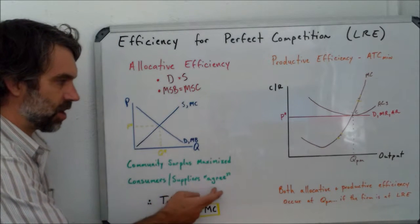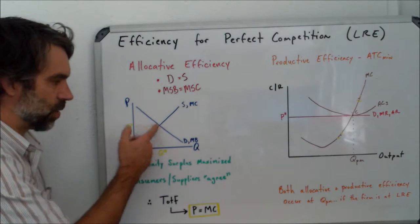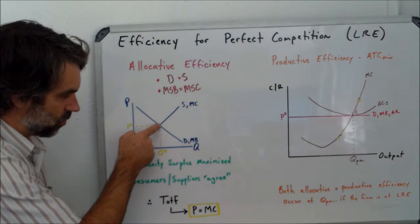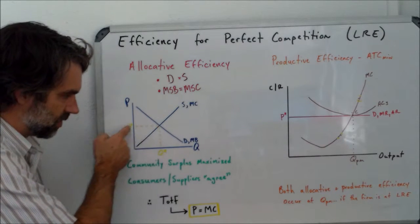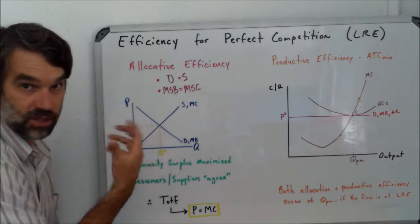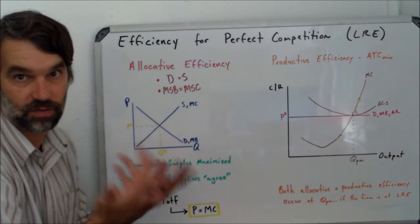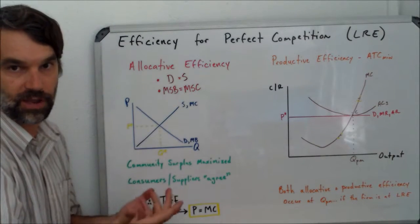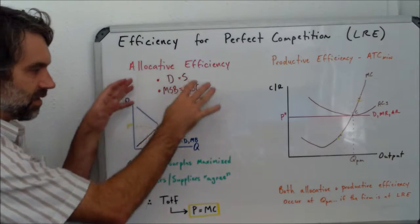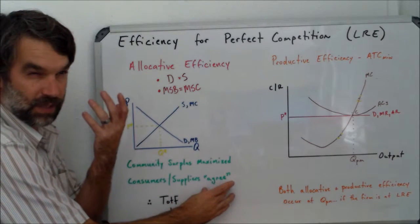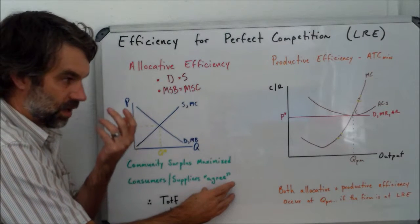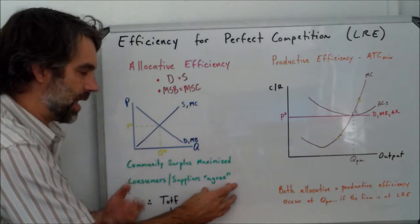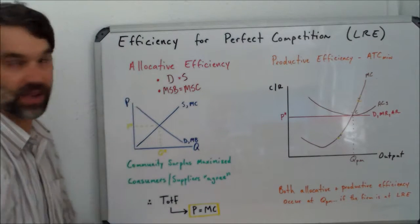So the demanders are saying, hey, we think this product is worth, this marginal product is worth this price. And the suppliers, coincidentally, this is the coordination effort or effective price. Suppliers are saying, yes, we also think that's worth the price. So that's why it's allocatively efficient because you have this agreement or this coordination of two kind of opposing groups seeing it the same way. That's what's happening at the point of allocative efficiency.